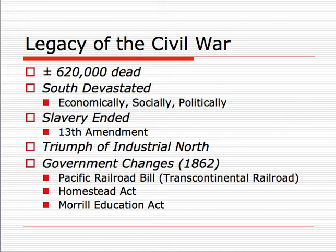The North emerged victorious. Many people saw the Civil War as a battle between an agricultural society and an industrial society—clearly, the industrial society won. We saw massive government changes in the North: the Transcontinental Railroad Bill, the Homestead Act, and the Moral Education Act. All of these acts had been opposed by Southern politicians, but with the South out of the government, Northern politicians could push these bills through with less opposition.